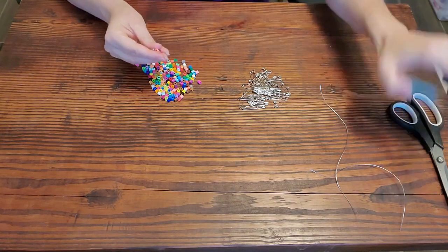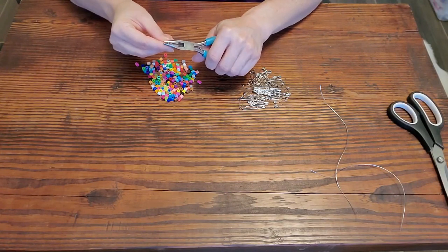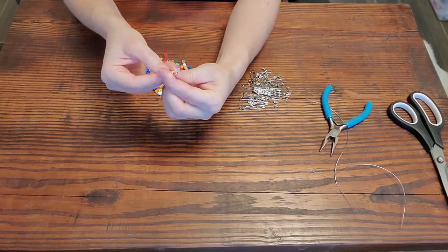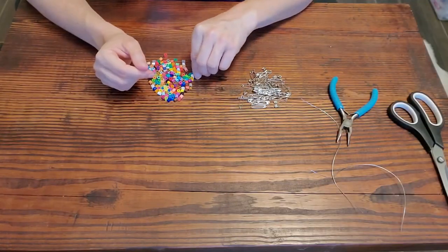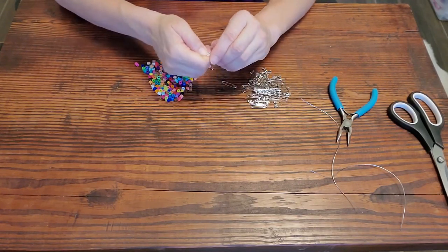Then you're going to take your needle nose pliers or whatever you're using, and you're going to pinch it tight so that it doesn't pop open on you. Then you're just going to keep doing this until you've gotten all the beads that you want on your safety pins.